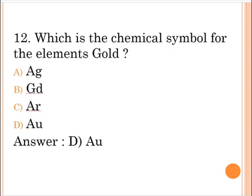Next question: What is the chemical symbol for the element gold? A. AG, B. GD, C. AR, D. AU. The correct answer is option D, AU.